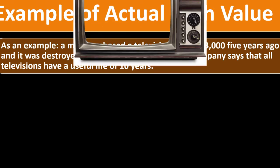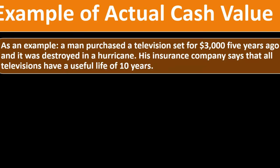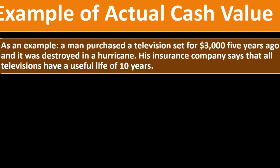As an example: a man purchased a television set for three thousand dollars five years ago, and it was destroyed in a hurricane. His insurance company says all televisions have a useful life of 10 years. You might ask why not use mileage for a car — and they could — but the default method uses years, meaning they're not really taking into consideration how much care you put into it. They're using an average calculation as a starting point.